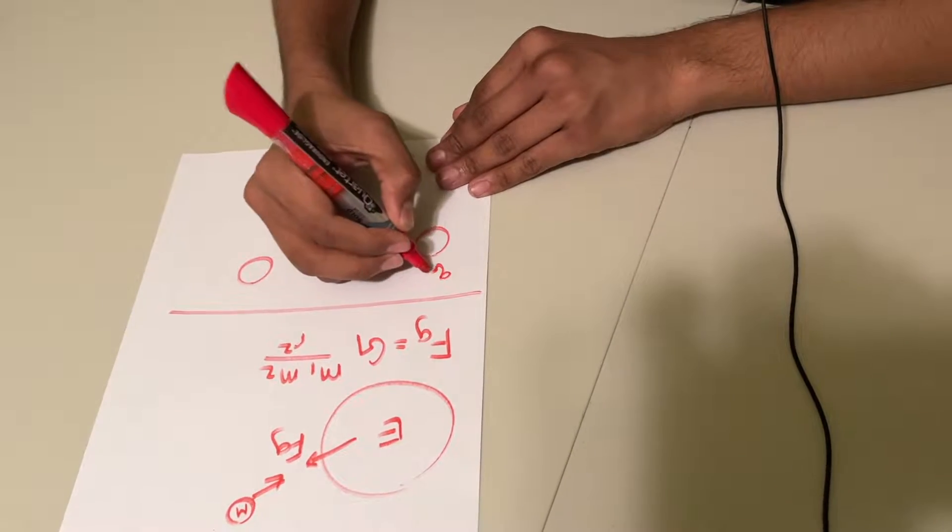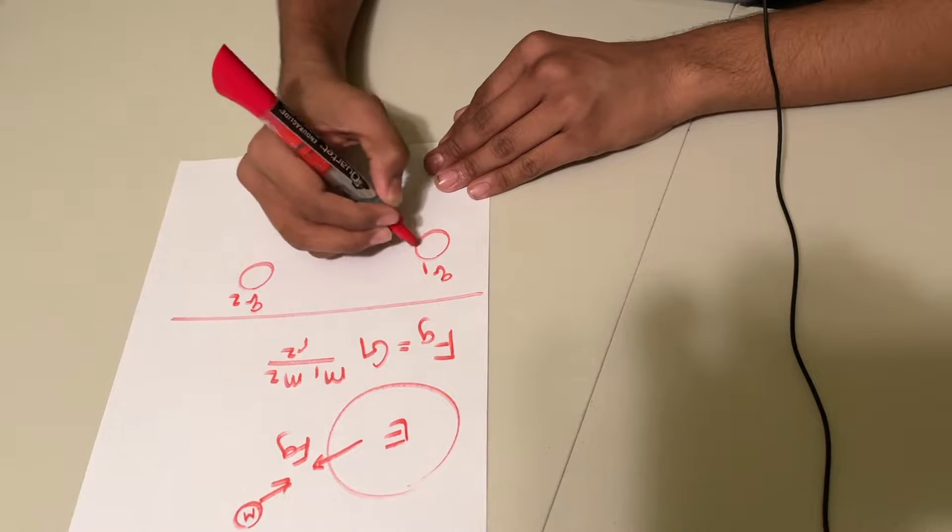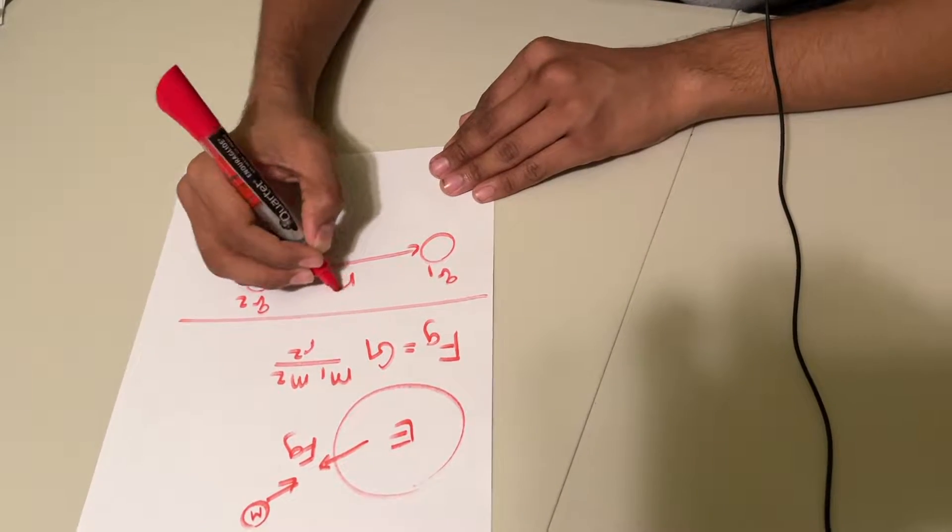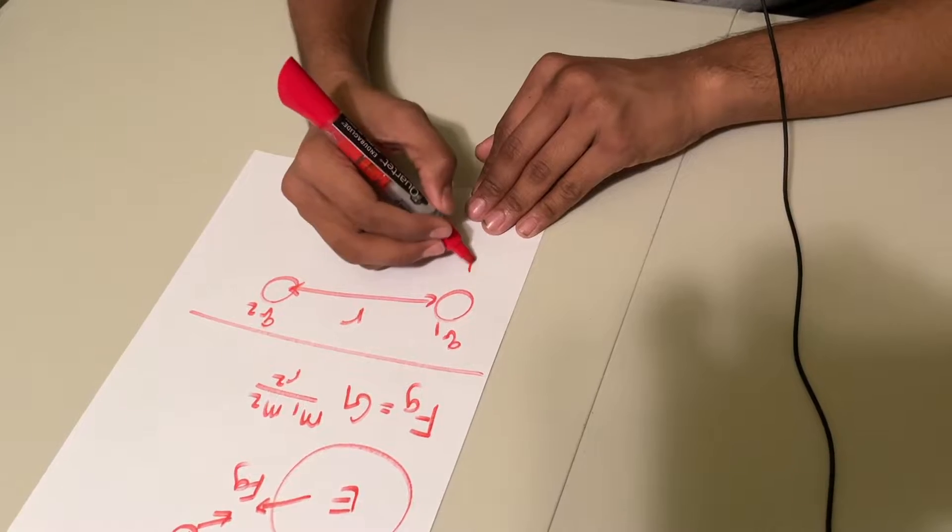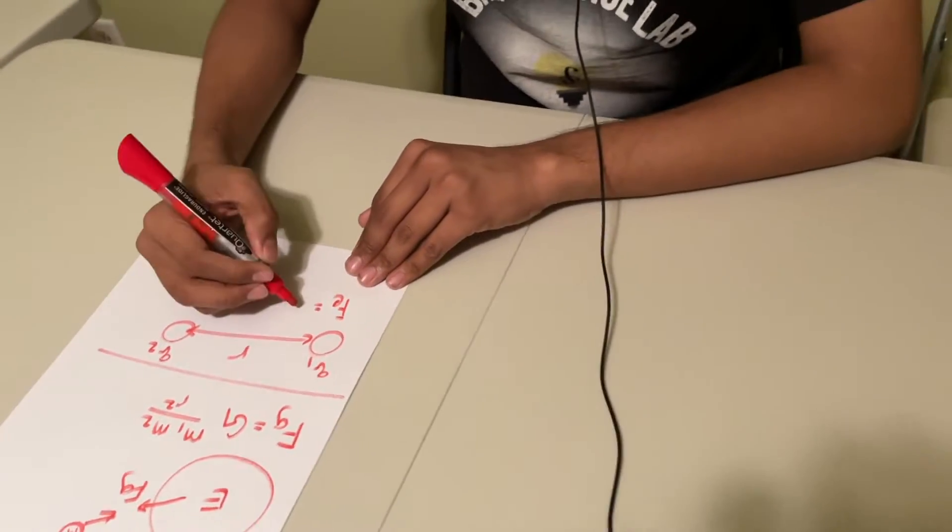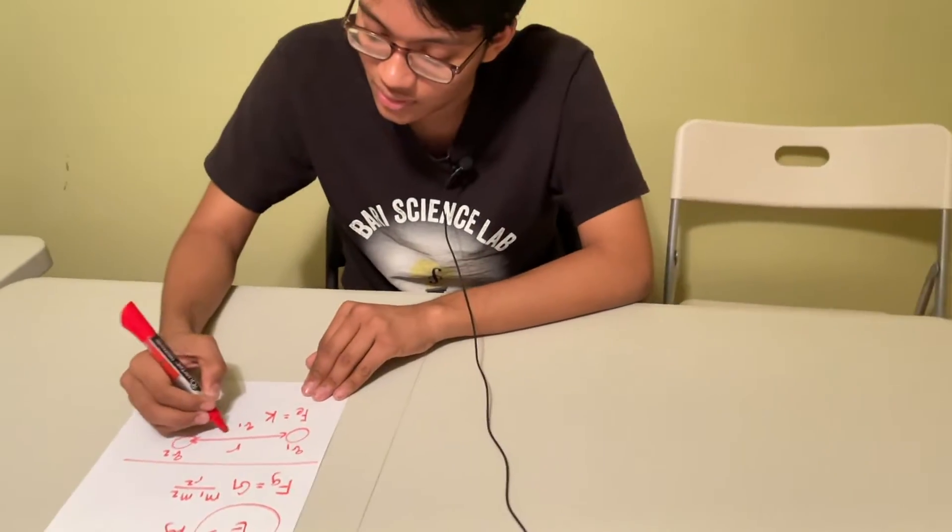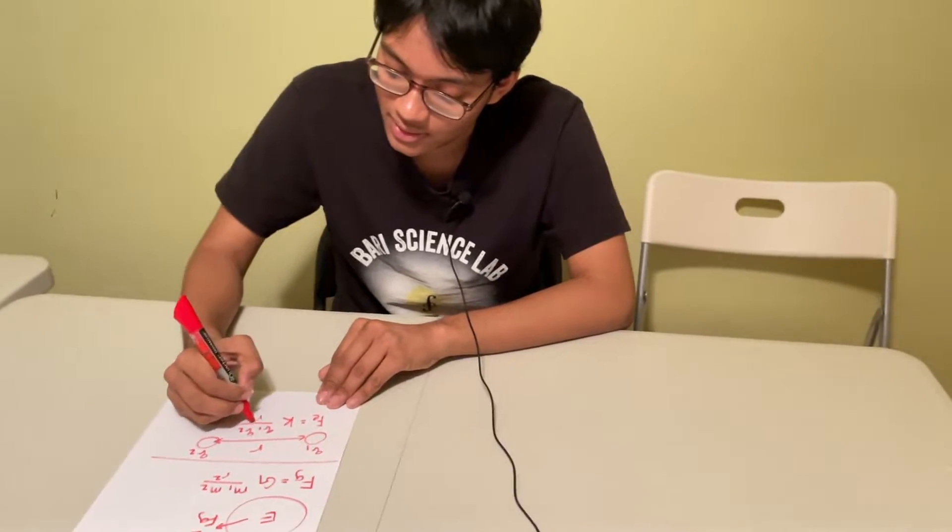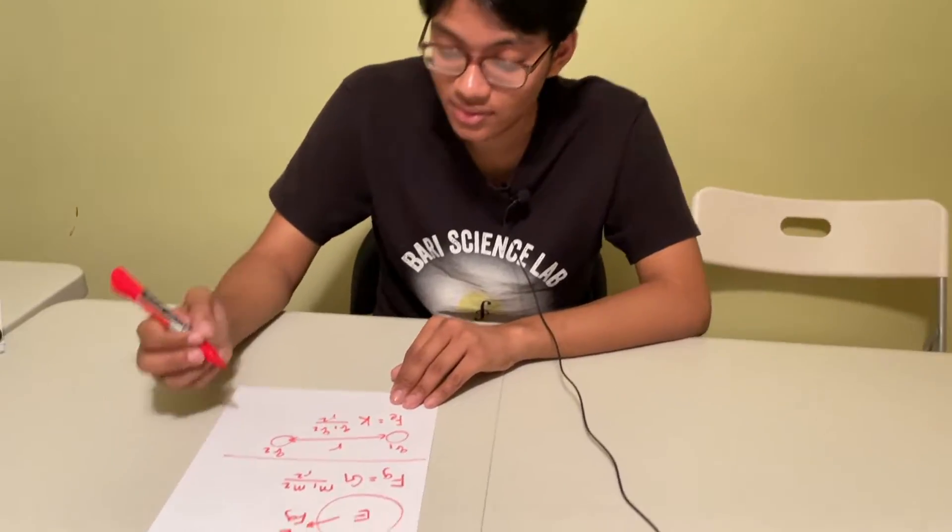We also have the force between two charges q1 and q2 separated by a distance r. So the force between these two charges is the electric force, so that's going to be k q1 q2 over r squared.